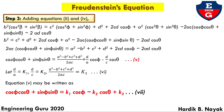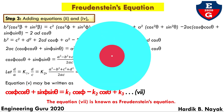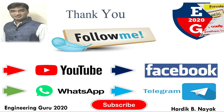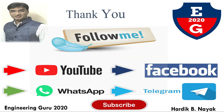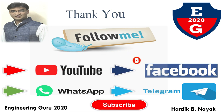Equation number 7 is known as Freudenstein's equation, where K1 equals d/a, K2 equals d/c, and K3 equals (A squared minus B squared plus C squared plus D squared) divided by 2AC. This was the video regarding Freudenstein's equation. If you find this video helpful, please like, comment, share, and subscribe to my YouTube channel. Thank you.